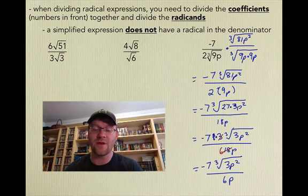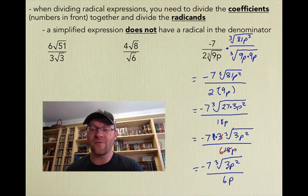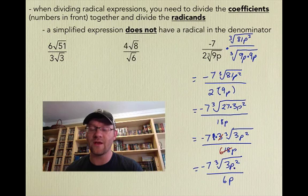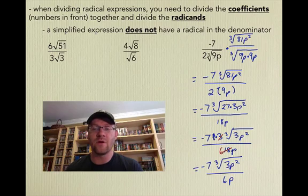We check that we can't simplify anything further. Negative 7 and 6 don't simplify. The p's can't be combined with the p under the cube root sign, because that p is actually the cube root of p squared. So we are as simple as it gets.